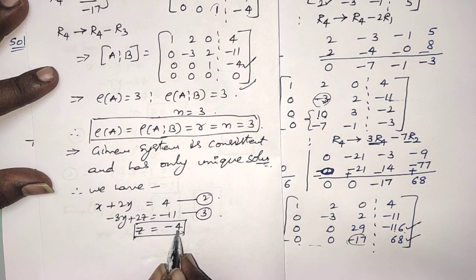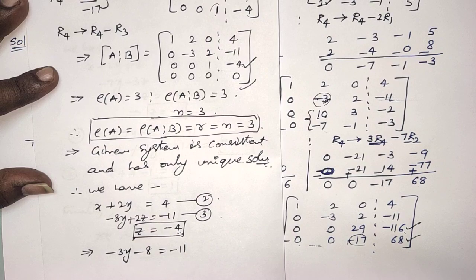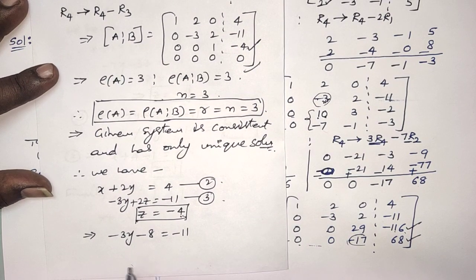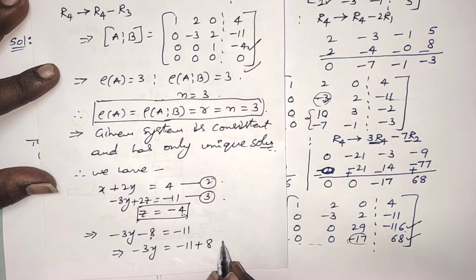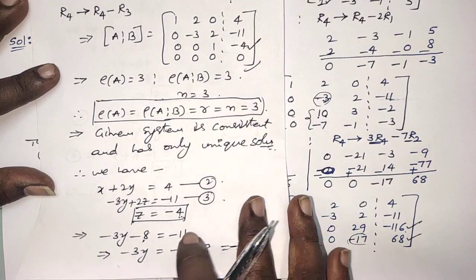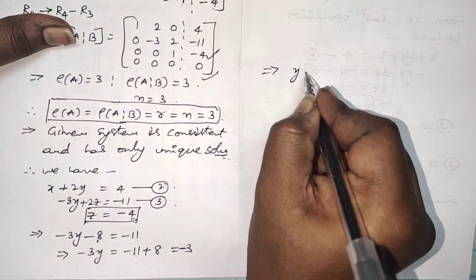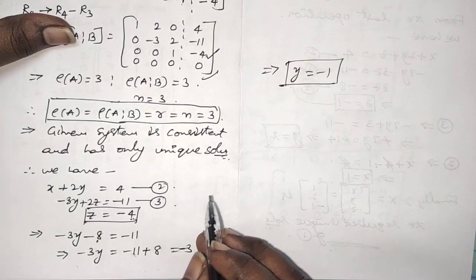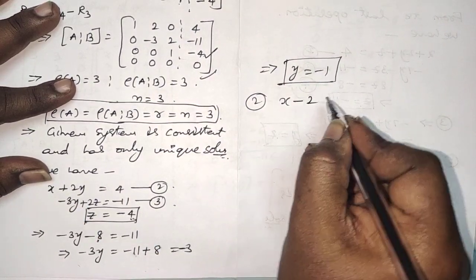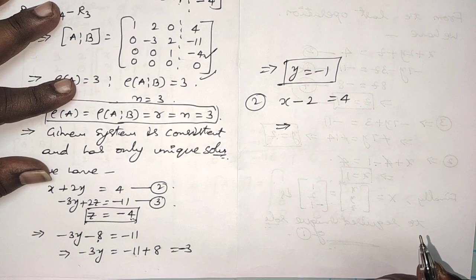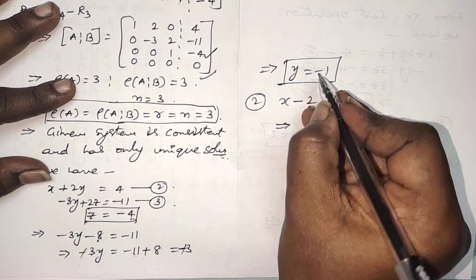Substitute Z = minus 4 into the second equation: minus 3Y + 2(minus 4) = minus 11, so minus 3Y minus 8 = minus 11. Taking minus 8 to the right side: minus 3Y = minus 3. Therefore Y = 1.